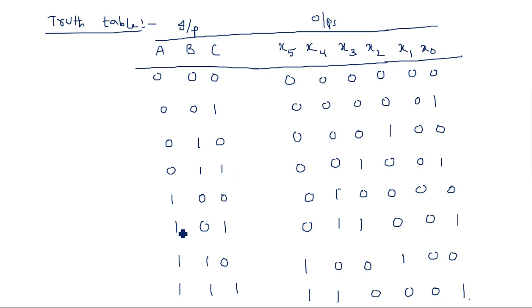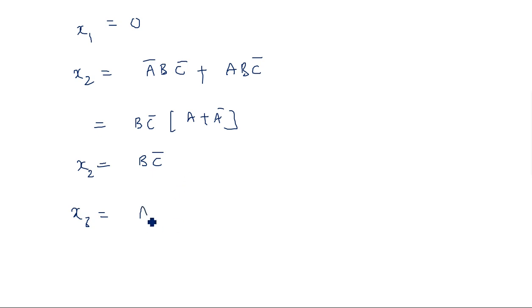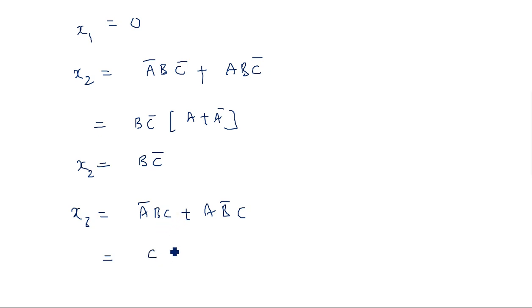X3 is 1 at two places: Ā·B·C and A·B̄·C. So X3 = Ā·B·C + A·B̄·C. Taking C common gives C·(Ā·B + A·B̄), which is C times the XOR of A and B. So X3 = C·(A ⊕ B).